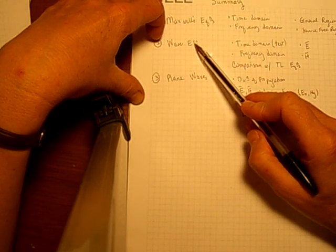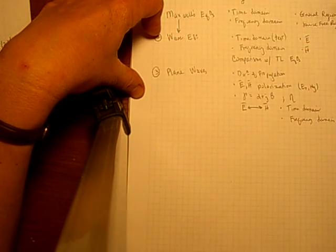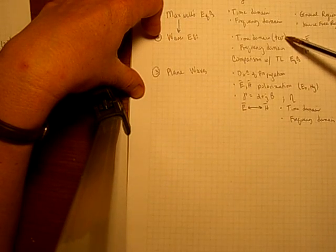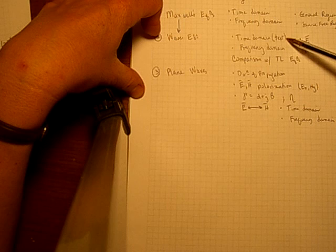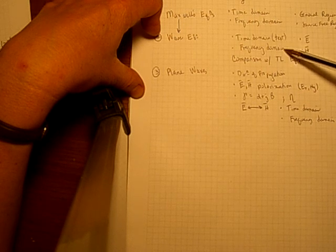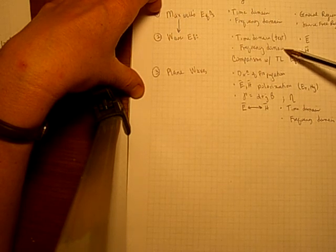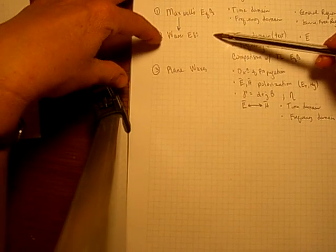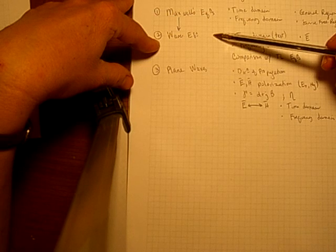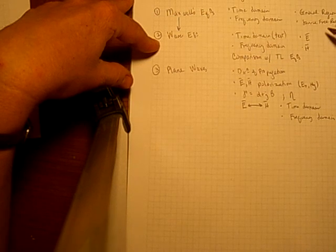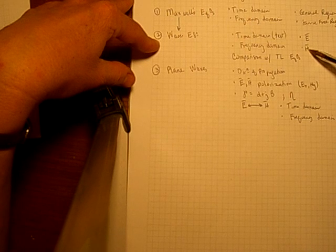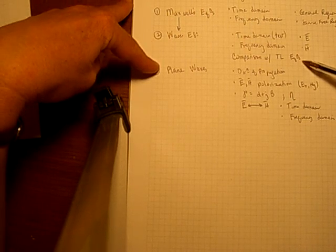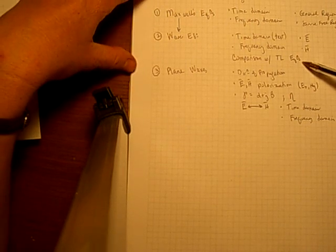The wave equation is then derived from Maxwell's equations. The textbook derives this for the time domain, so please take a look at your text. We derived it in this lecture for the frequency domain, and what we did was went from coupled first-order differential Maxwell's equations to a single second-order differential equation, which represents the wave. We did that for the electric field, and you can similarly do it for the magnetic field. We also compared these to the transmission line equations.